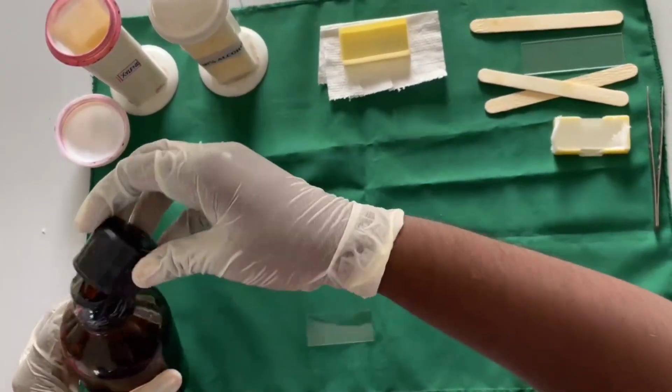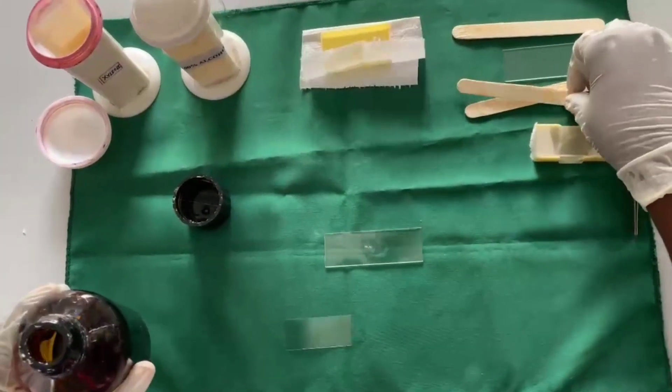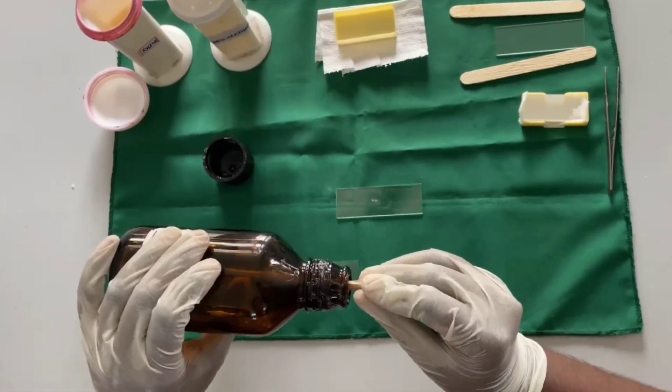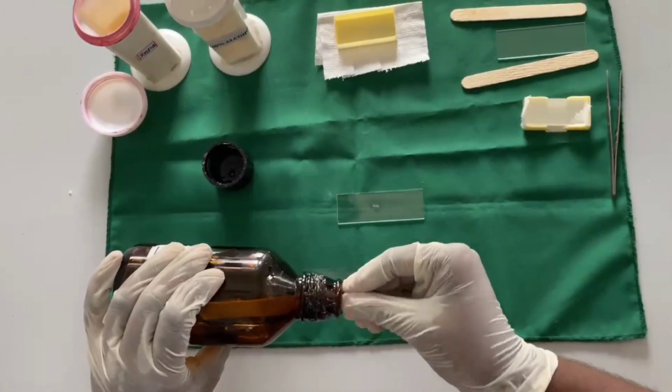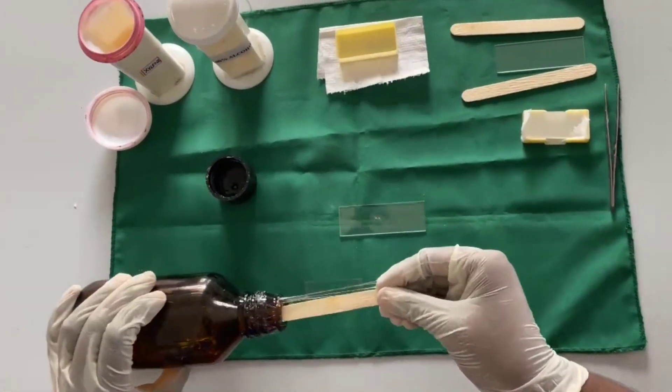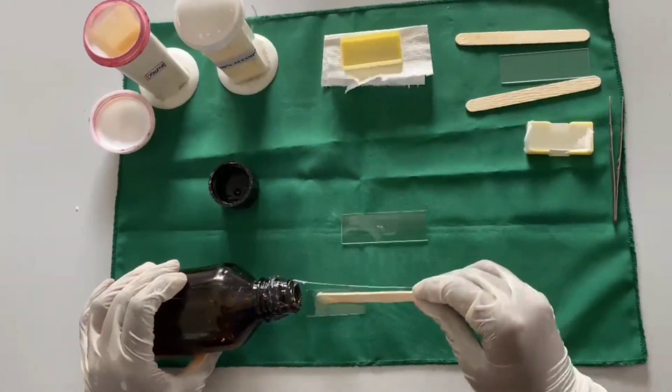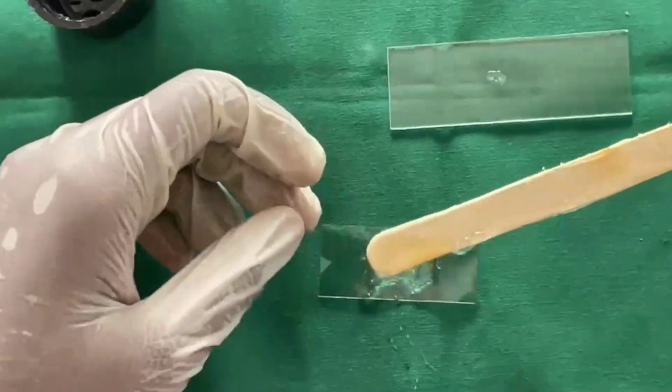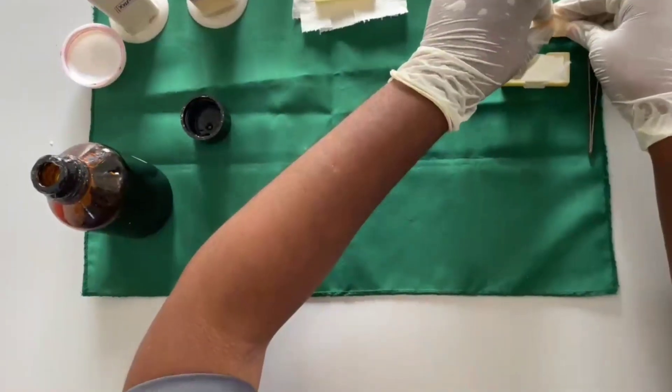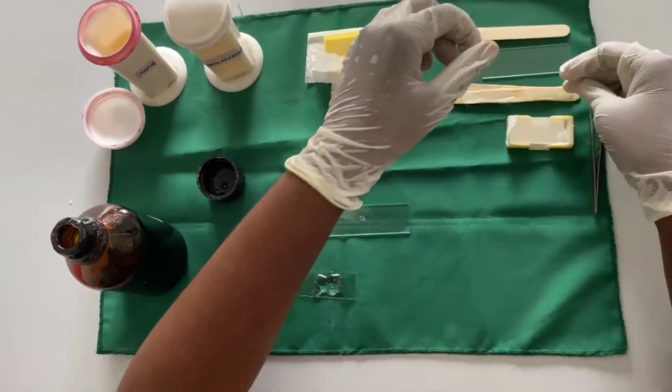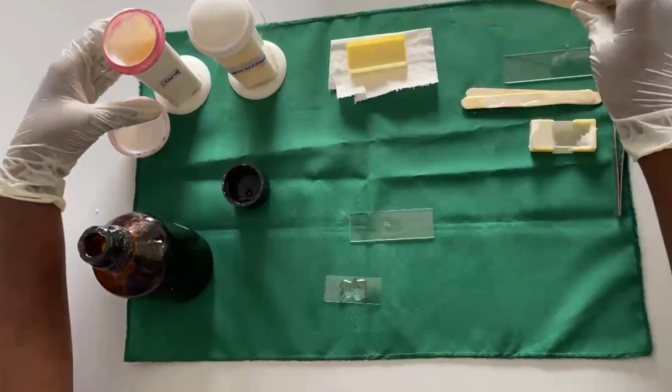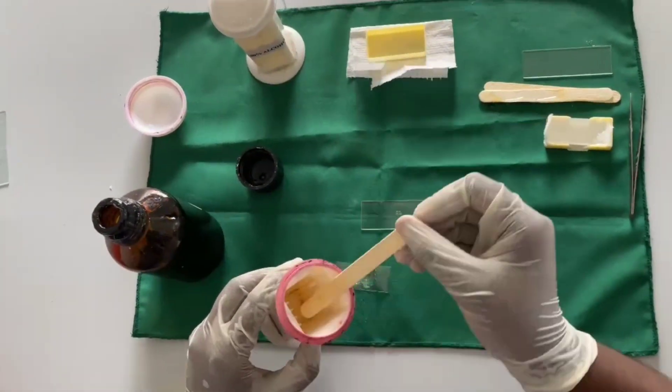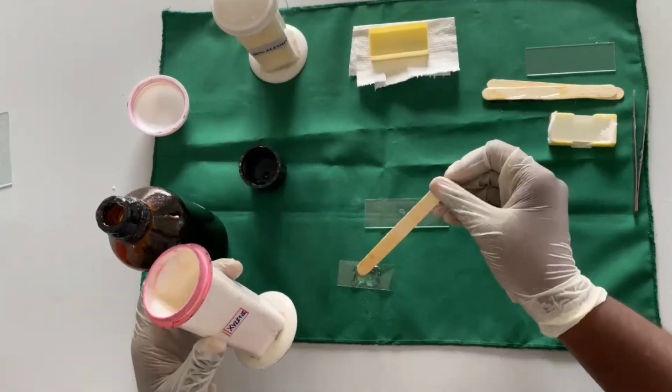The final step is to add DPX mountant on the coverslip. These are synthetic resin mounting media. Mounting medium is used to attach a coverslip to a microscopic slide to protect the tissue during microscopy and storage.